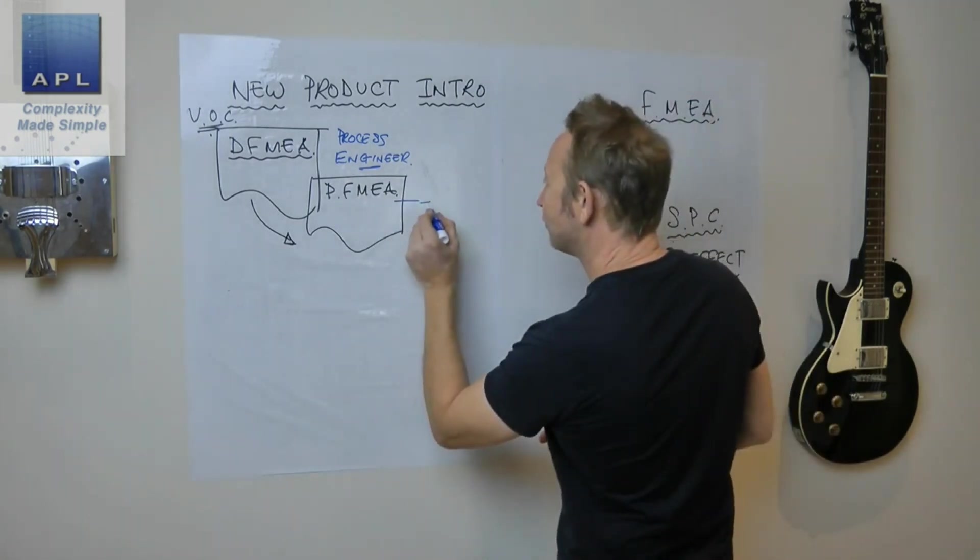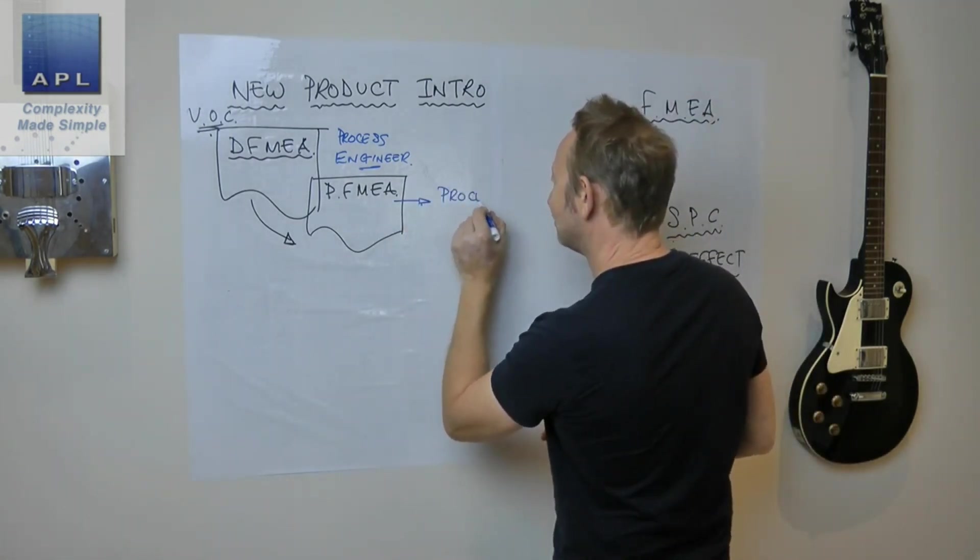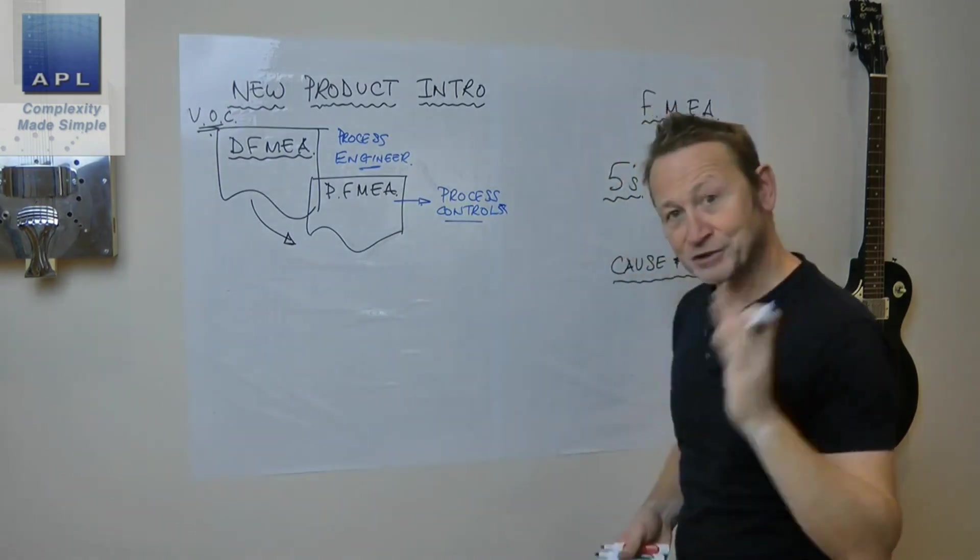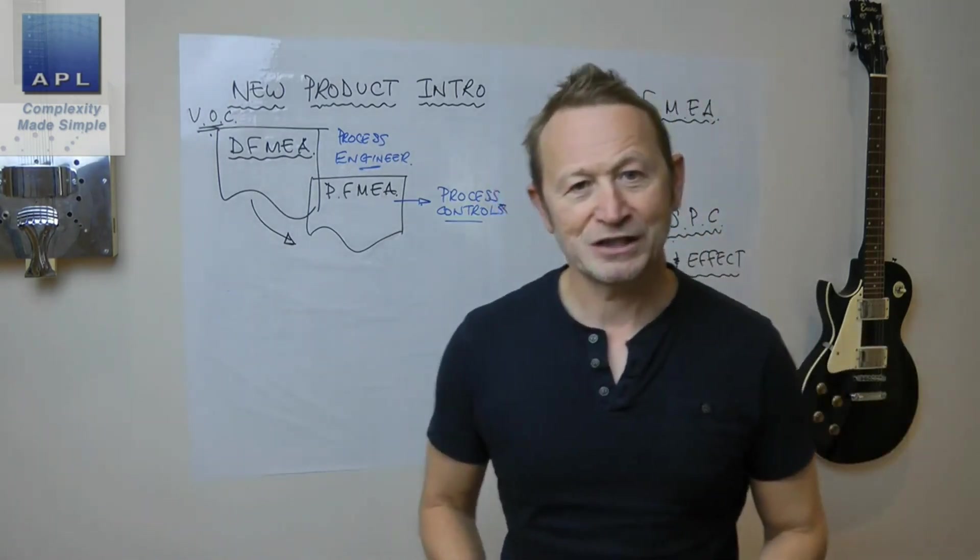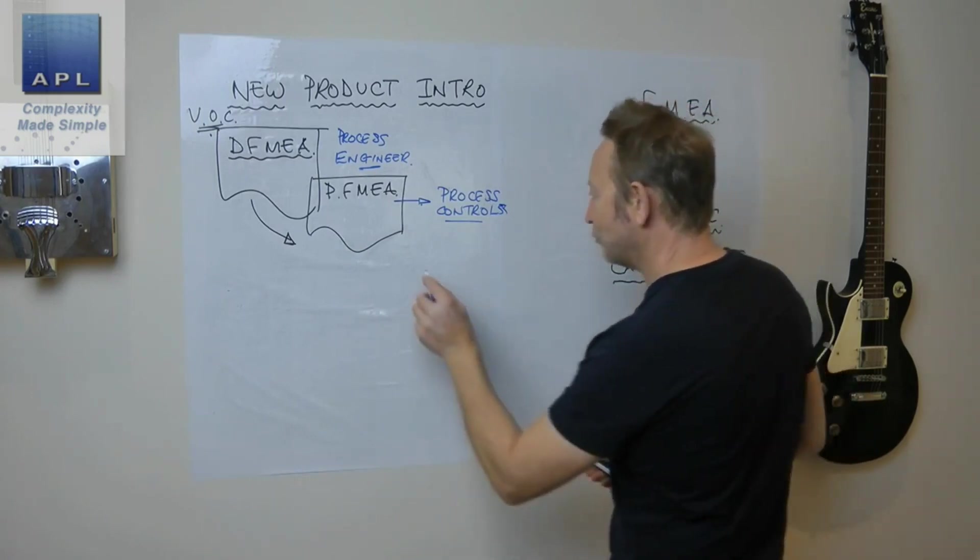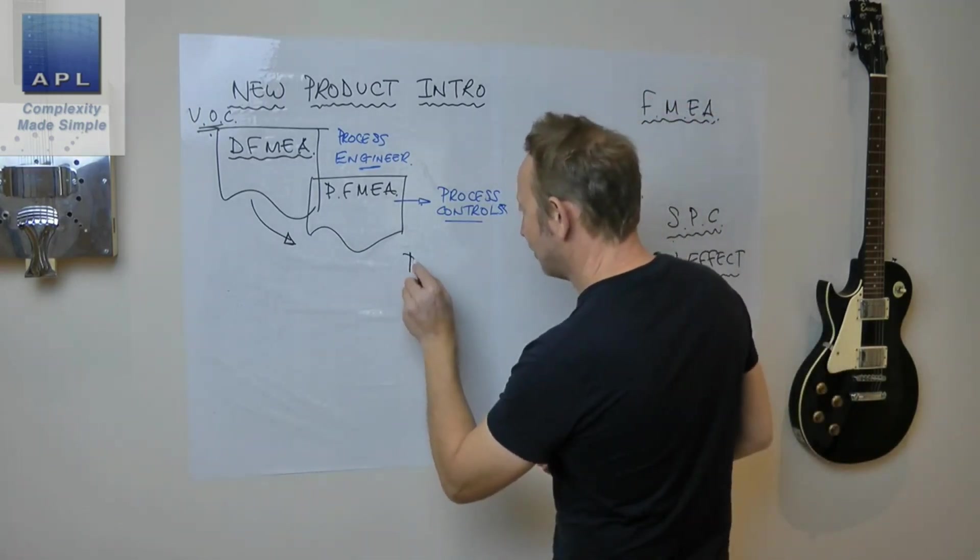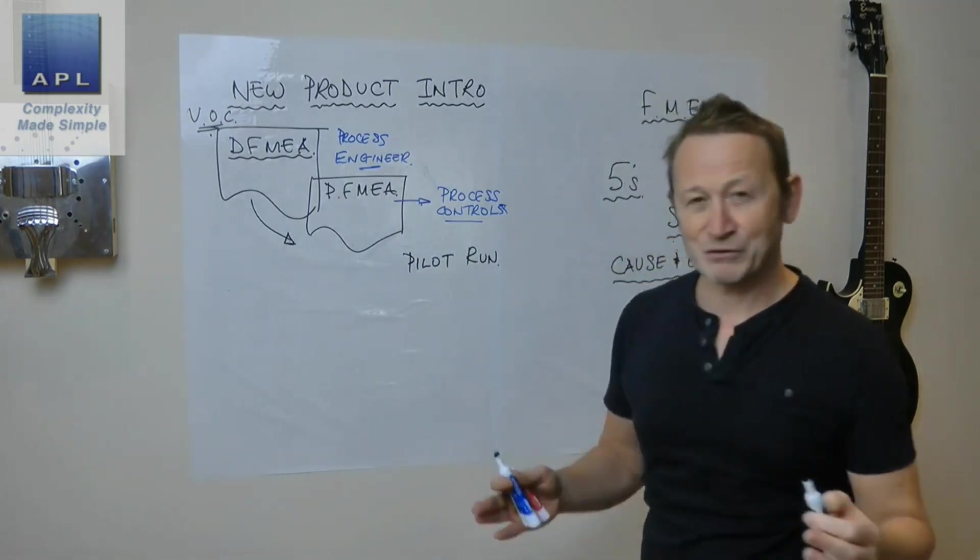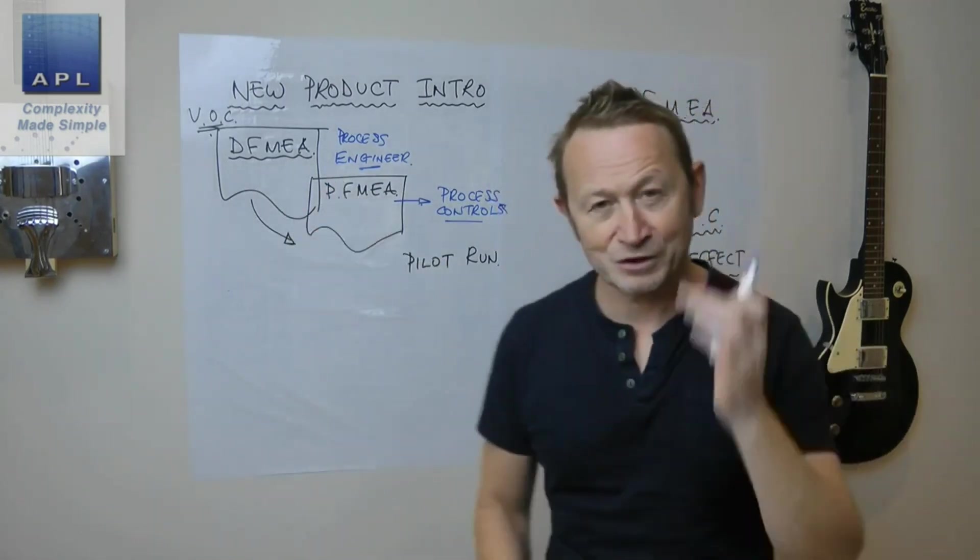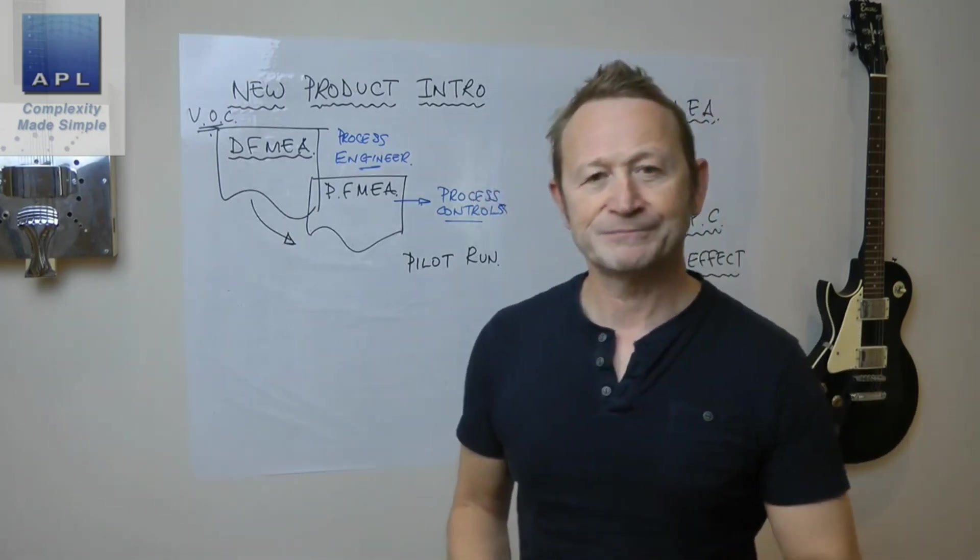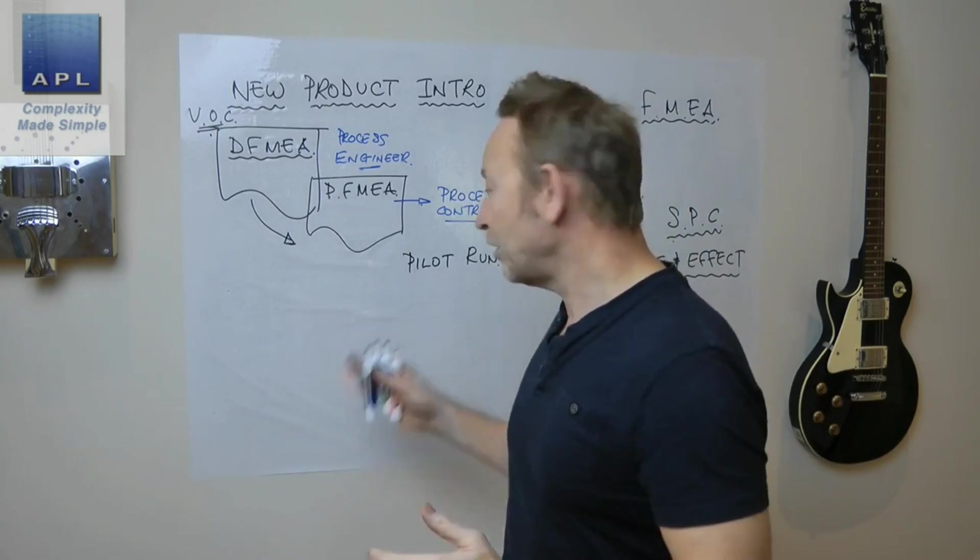What comes out of here are your process controls. A control plan should come out of this if it's done correctly. Once you've designed the process, now what you're going to do is you're going to move to doing real things. First thing you're going to do is a pilot run. You might do prototypes before this, there might be some prototype work, but we're assuming that the product's got designed and we're going to make the item now, going to do a pilot run.